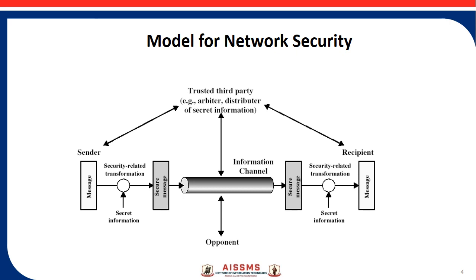The two parties, who are principals in the transaction, must cooperate for the exchange to take place. When a transfer of data happens from one source to another, a logical information channel is established between them by defining the route through the internet from source to destination, using a communication protocol such as TCP/IP by the two principals. Some secret information is shared by the two principals and is kept unknown to the opponent.